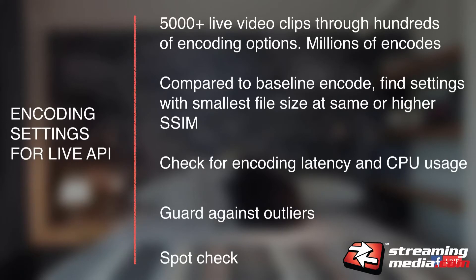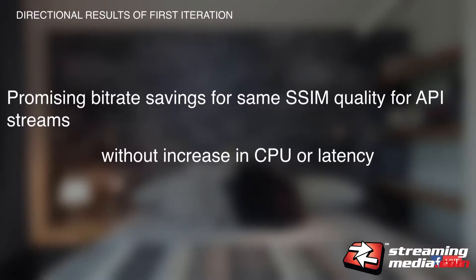Of course, we also guarded against outliers — cases where overall average SSIM looked great but certain parts of the video didn't compress well. And finally, trust but verify: we spot-checked a few videos, because there's no better measurement than just watching them. Some looked great, some did not. After this five-point check, we came up with a few options that looked much better than our previous one. This is just the first iteration of the approach we're thinking about for live encoding, but we already see double-digit gains in terms of compression efficiency at the same quality and same resource usage. The directional results are very, very promising.